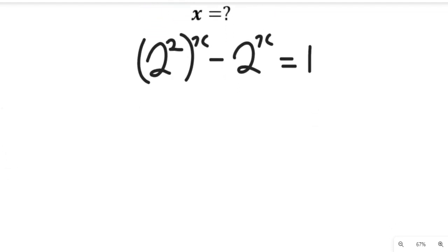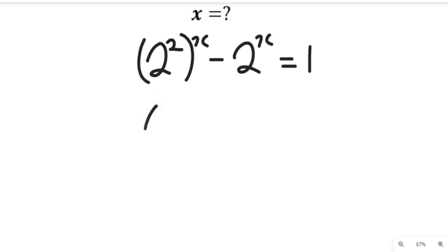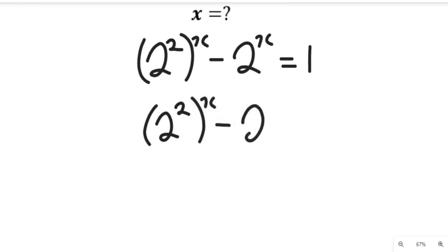All we need to do is bring the 1 over to the other side. So we'll have 2 to the power of 2, all to the bracket x, minus 2 to the power of x, minus 1, equal to 0.